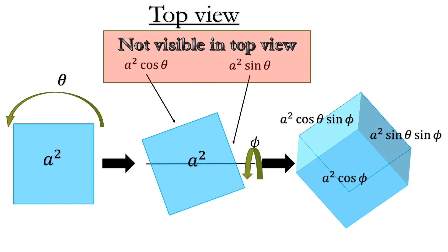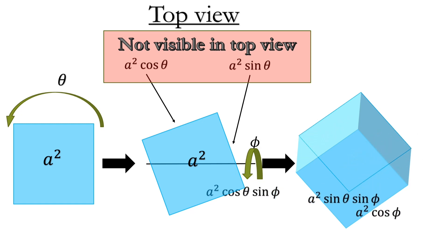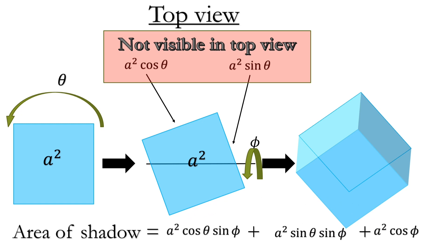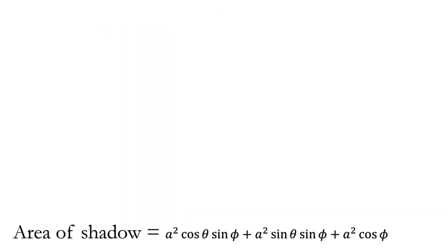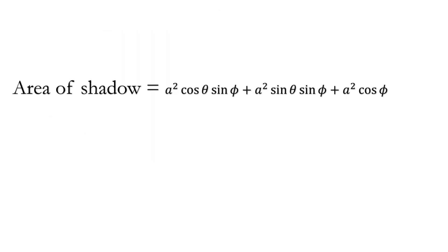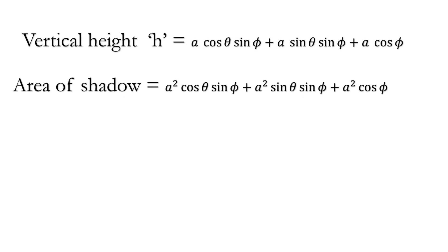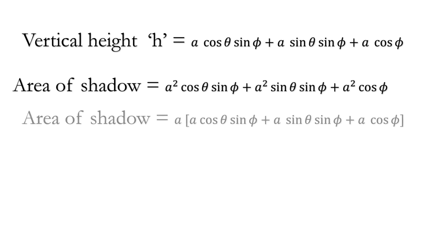We earlier calculated the vertical height as h = a(cos φ + sin θ·sin φ + cos θ·sin φ). The area of shadow matches this expression, so taking a as common: area of shadow = a × h = 10 × 15 = 150 square centimeters. That is our solution.